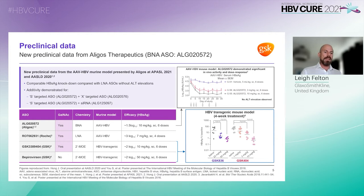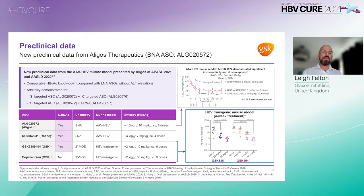New pre-clinical data from the AAV-HBV murine CHB model was presented by Aligos for their GalNAc conjugated S-targeted ASO at Basel and AASLD. Aligos demonstrates a suppression of S antigen but without the ALT elevations that have previously been associated with LNA chemistry.